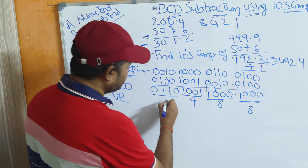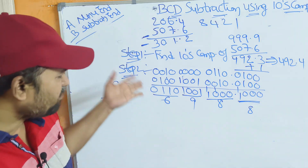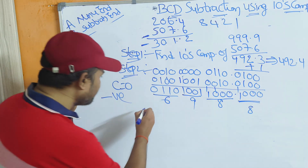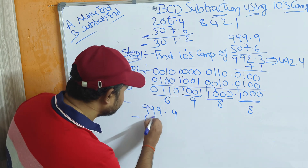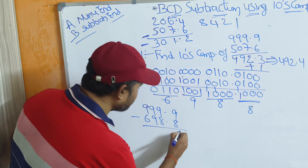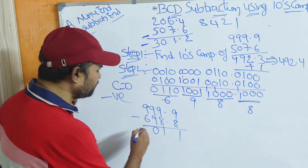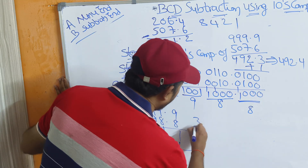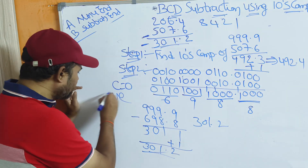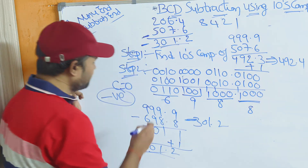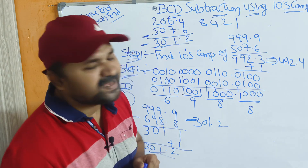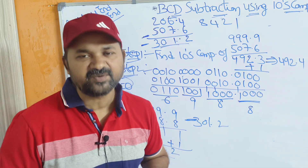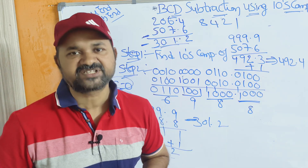The carry is 0. Since there is no carry, the result is a negative number and we must take the 10's complement of the result. The BCD result reads as 698.8. Now finding the 10's complement: 9's complement of 698.8 is 9 minus 8 equals 1, 9 minus 9 equals 0, 9 minus 6 equals 3, dot, 9 minus 8 equals 1, giving 301.1; plus 1 equals 301.2. So the result is minus 301.2. Please like the video, subscribe to the channel, and share it with your friends. Thanks for watching.